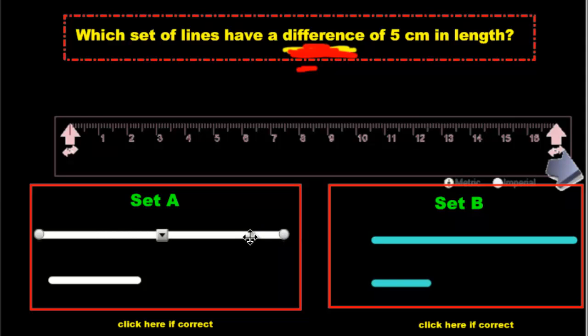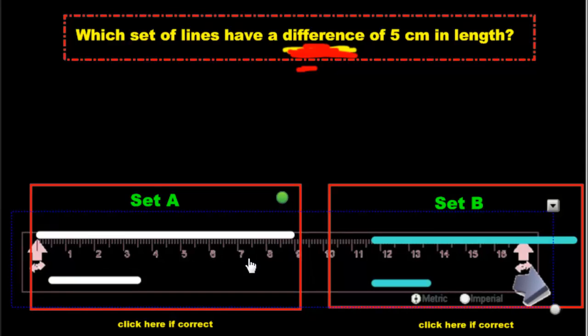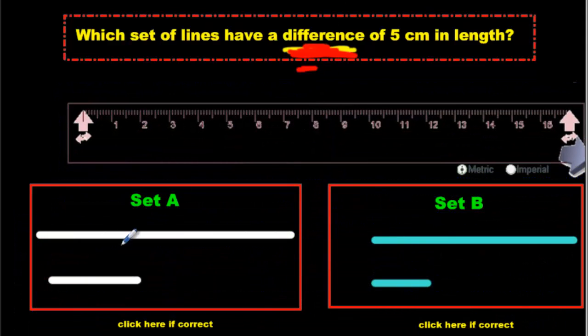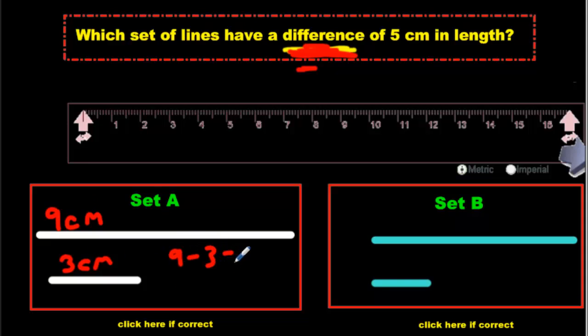So we'll put it here. We'll go, okay, it's 9 centimeters. And this one is 3. So we'll write 9 and 3 down. Here's 9 centimeters. Here's 3. And the difference, so we got a takeaway. 9 take away 3 equals 6 centimeters. So that's the difference. That's not what it's saying. We want a difference of 5.